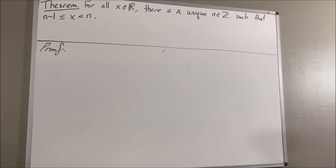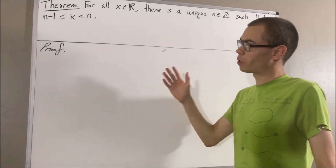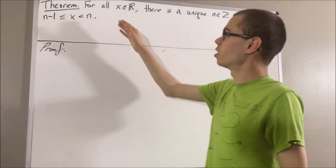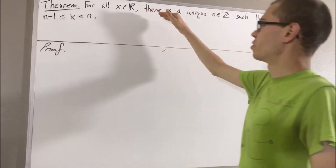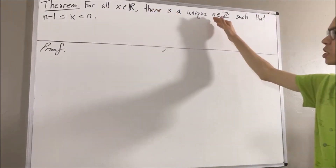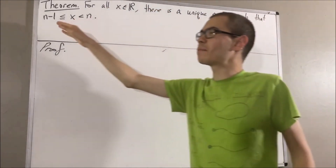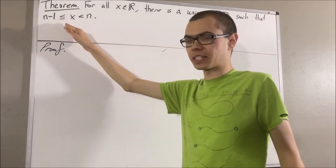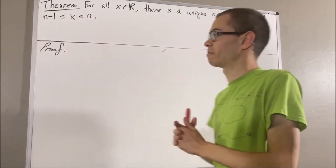Hello! In this video, we are going to prove the following theorem. For all real numbers x, there is a unique integer n such that n minus 1 is less than or equal to x, which is less than n.